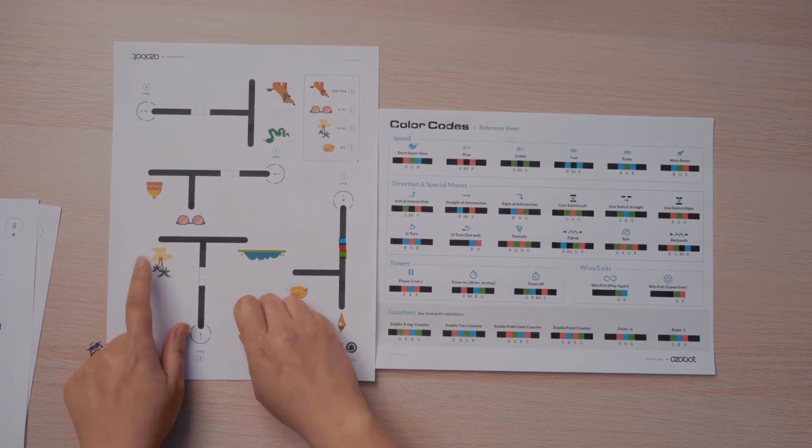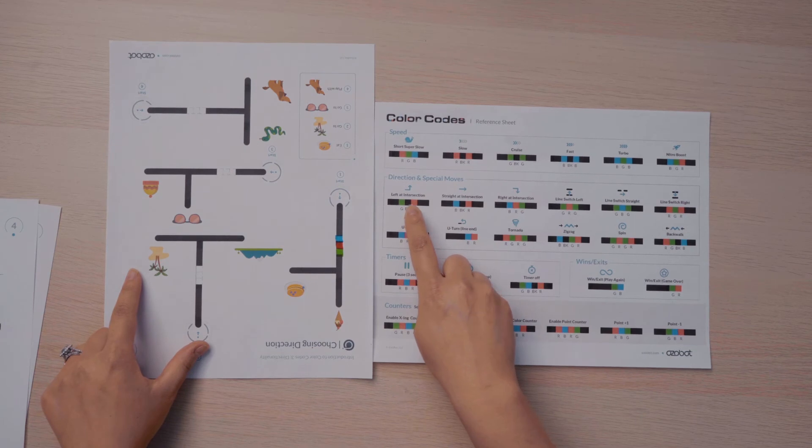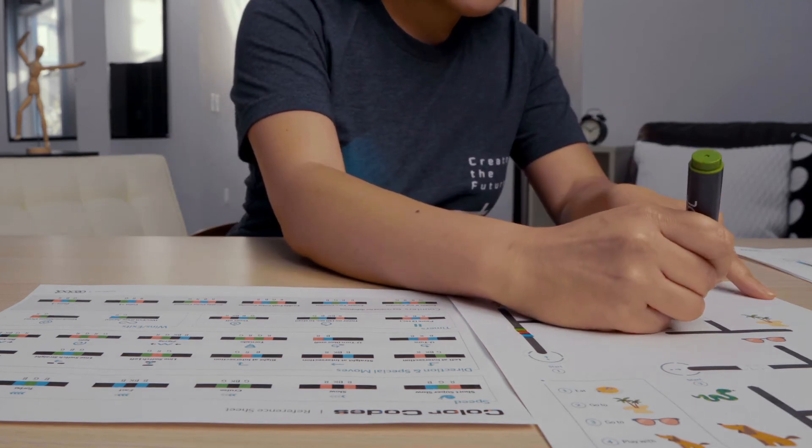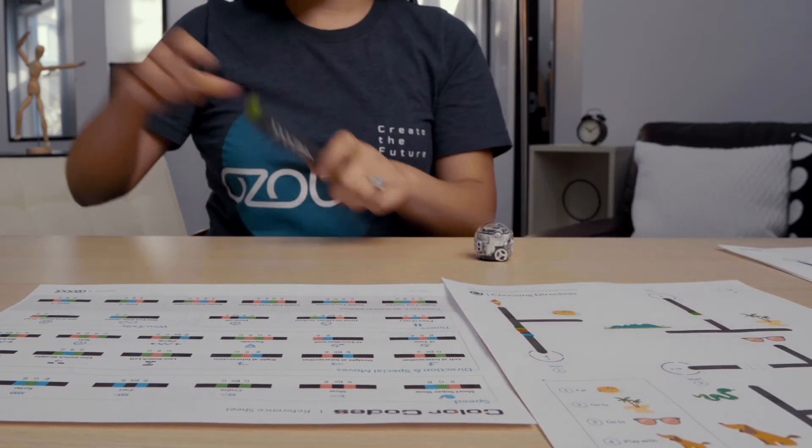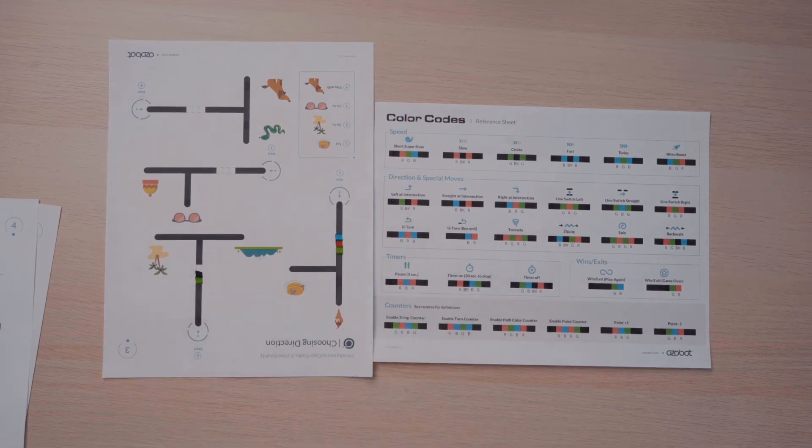That's right. It needs to turn left. So I'm going to use my color code reference sheet to find left at intersection. That's green, black, red. I'll take my markers. Green, black, and red.